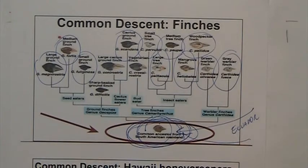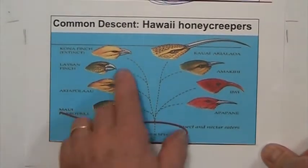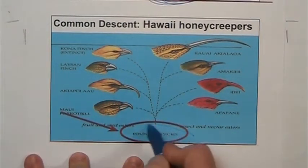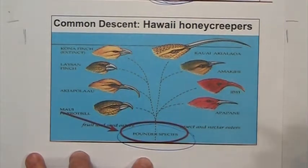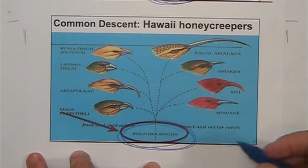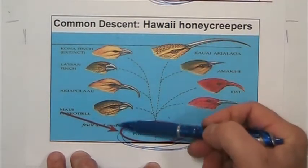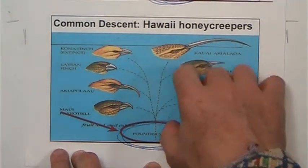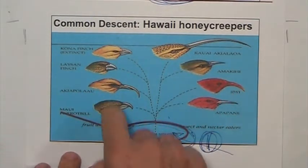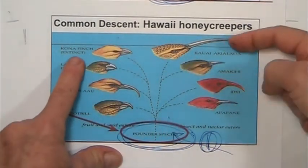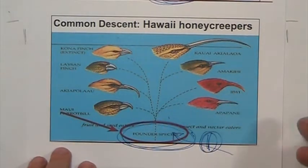Over time they become different species — they become so different that they don't recognize each other anymore. We have the same situation in Hawaii with beautiful birds called honeycreepers. Hawaii is a volcanic island, just like the Galápagos — the island pops up in the middle of the ocean, and birds colonize it from the mainland. You have the original species — one species — and then depending on the island and the particular environments of each Hawaiian island, specific traits were selected for and they started diverging. Now each one of these is so different from the others that they do not mate with each other.